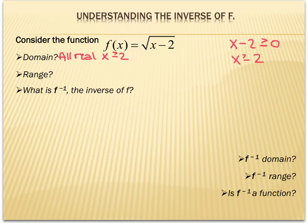Range refers to what y values we get when we plug in our x values. Starting at x = 2 — the smallest allowed input — we get 2 − 2 = 0 under the radical, so the smallest y value we achieve is 0. As we plug in x values bigger than 2, we get y values bigger than 0. So the range is all y ≥ 0.